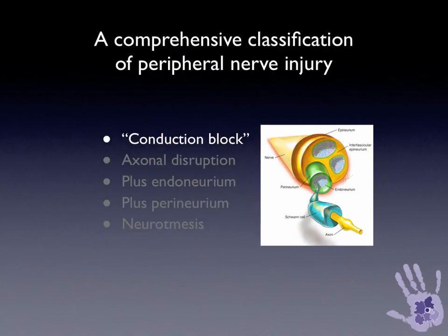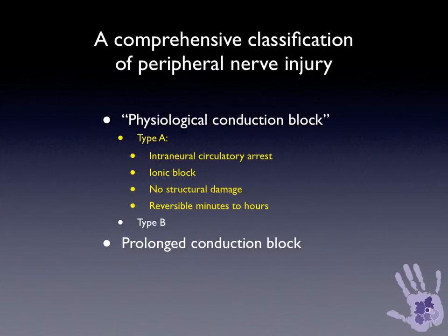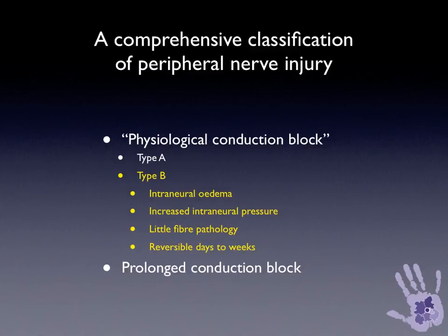Nowadays we use the term conduction block. Conduction block implies that there is no major structural damage to the nerve, but for some reason the nerve is not able to conduct electrical impulses. Conduction block type A involves intra-neural circulatory arrest — an ischaemic event causing ionic block without structural damage — and is reversible within minutes to hours. This is likened to the pins and needles or paraesthesia experienced with prolonged tourniquet application beyond 5 to 10 minutes, which resolves very quickly. Physiological conduction block type B is related to intra-neural oedema with increased intra-neural pressure and very little fibre pathology, although the oedema may be seen with slight loss of fascicular definition on high-resolution ultrasound. Recovery here is within days to weeks, as there are no intra-neural lymphatics to clear the oedema. This type of injury is seen with compression or traction on the peripheral nerve.